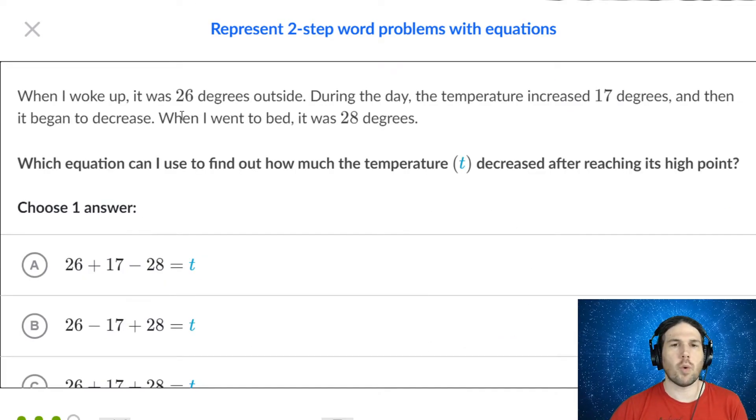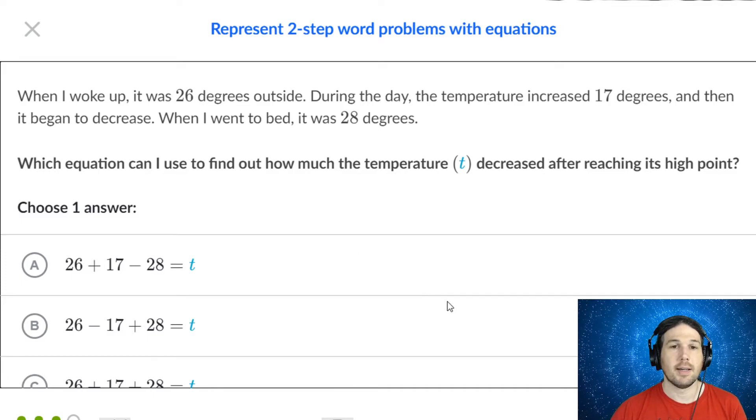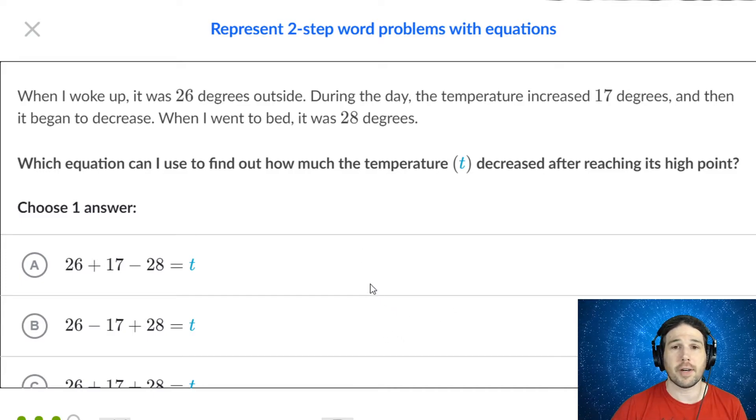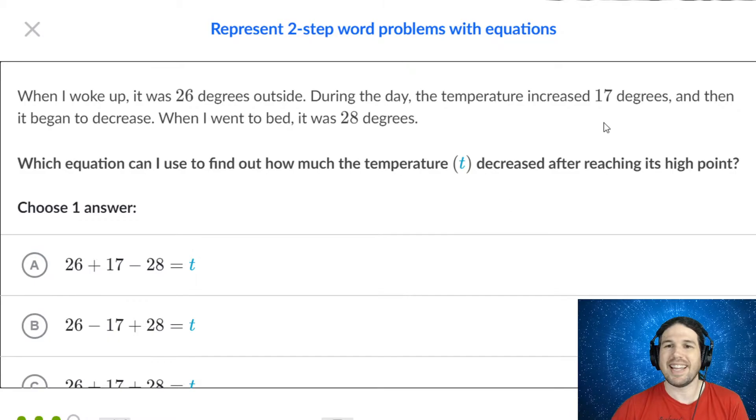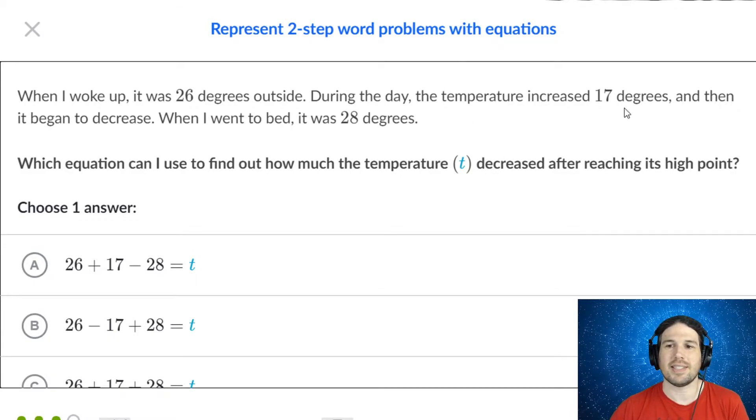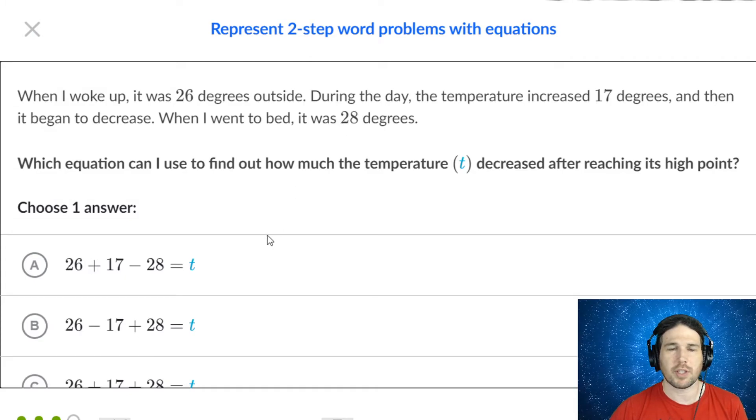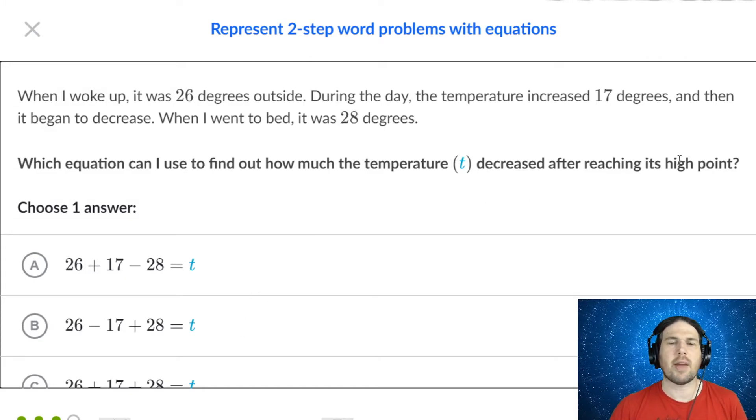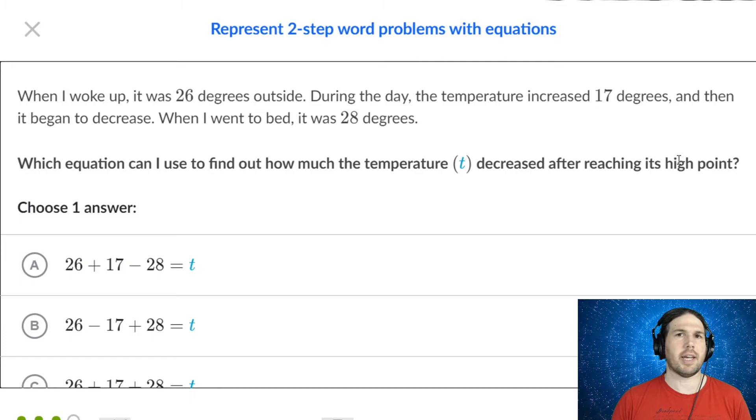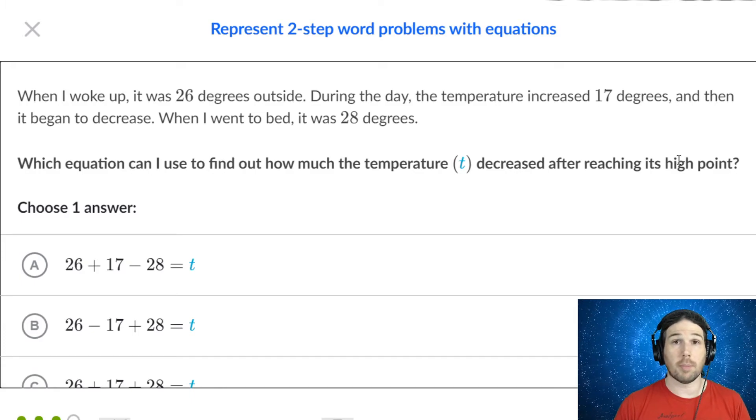When I woke up, it was 26 degrees outside. Now that could be centigrade or Fahrenheit. I mean freedom. During the day, the temperature increased 17 degrees, and then it began to decrease. When I went to bed, it was 28 degrees. Now again, we're not even being asked for the answer here, right? We just want to set up the problem.